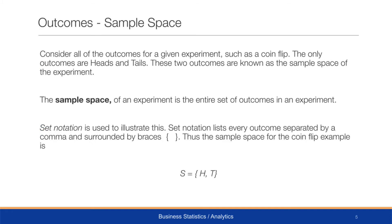Every outcome has what is called a sample space. Consider all the possible outcomes for a coin flip — the only possible outcomes are heads and tails. These two outcomes become known as the sample space of the experiment; it is the entire set of outcomes for that experiment. To show sample space, we use set notation, which displays all possible outcomes using curly braces. Thus, the sample space for a coin flip, denoted by capital S, equals {H, T}, meaning the sample space is only heads or tails.